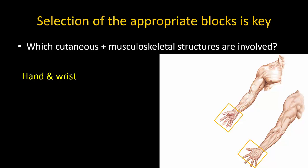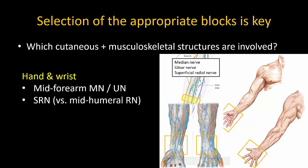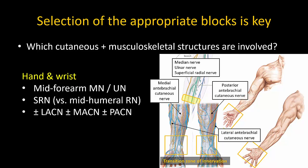Finally, for surgery on the hand distal to the wrist, the median nerve and ulnar nerve may be blocked at the mid-forearm level. The superficial radial nerve can also be blocked in the forearm, or if extensor muscle sparing is not critical, a mid-humeral radial nerve block can be performed instead. Note too that the wrist is a transition zone of innervation, and thus depending on individual anatomical variation, blocks of the antebrachial cutaneous nerves may be required for complete coverage.